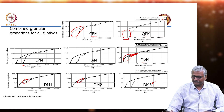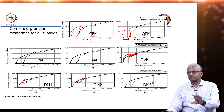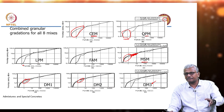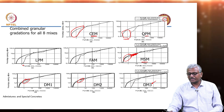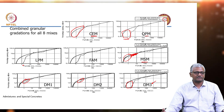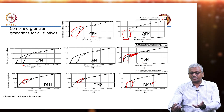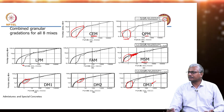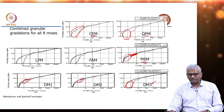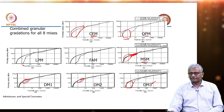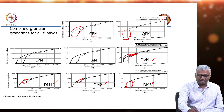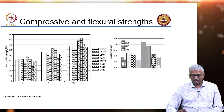If our assumption is correct that a curve close to ideal should give higher strength, which mixes should give the highest strengths? You should expect very good strengths with the micro silica mix, Design Mix 2 with fly ash and micro silica, and Design Mix 1 with quartz powder and micro silica. And that is exactly what happened in the strength results.